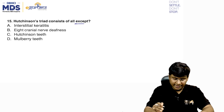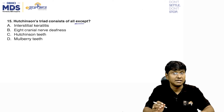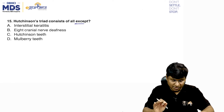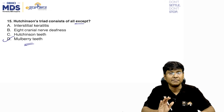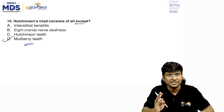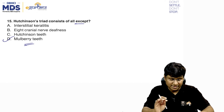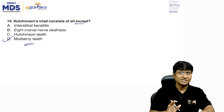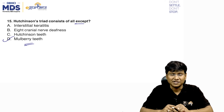Final question: Hutchinson's triad consists of all except — interstitial keratitis, eighth nerve deafness, Hutchinson's teeth, or mulberry teeth? Mulberry teeth is not a feature of Hutchinson's triad. Interstitial keratitis, Hutchinson's teeth, and eighth nerve palsy are the features of Hutchinson's triad. Those are all the questions of Grand Test 4, thank you very much.